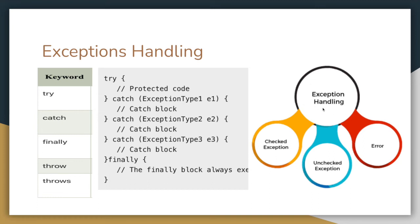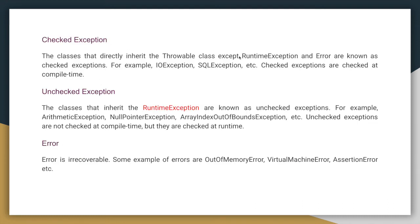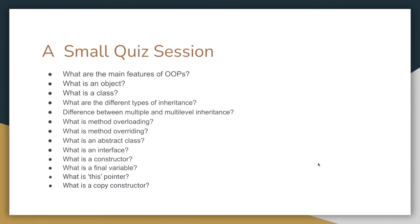Exception types: checked exceptions include all throwable exceptions except runtime exceptions and errors — for example, IOException and SQLException. Unchecked exceptions are runtime exceptions thrown automatically, such as ArithmeticException (divide by zero), NullPointerException, and ArrayIndexOutOfBoundsException. Unchecked exceptions are not checked at compile time but at runtime. Errors are irrecoverable — examples include OutOfMemoryError and VirtualMachineError.